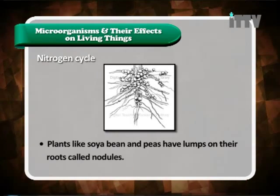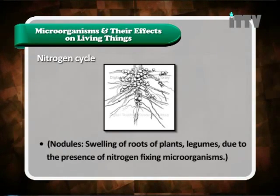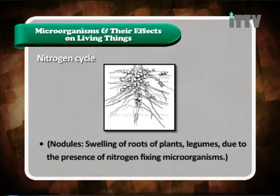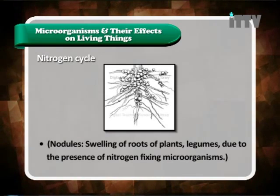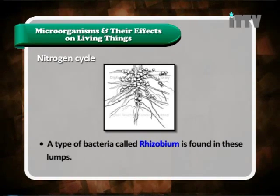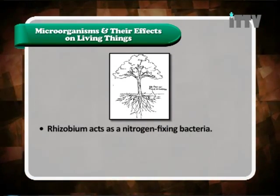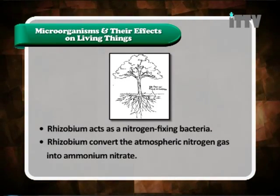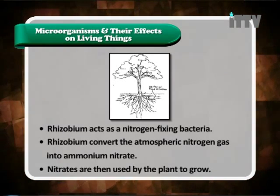Now let's move on to the nitrogen cycle. Plants like soya bean and peas have lumps on their roots called nodules — swellings due to the presence of nitrogen-fixing microorganisms. A type of bacteria called Rhizobium is found in these lumps. Rhizobium acts as a nitrogen-fixing bacteria, converting atmospheric nitrogen gas into ammonium nitrate. Nitrates are then used by the plant to grow. So the benefit of Rhizobium bacteria is seen in this nitrogen cycle.